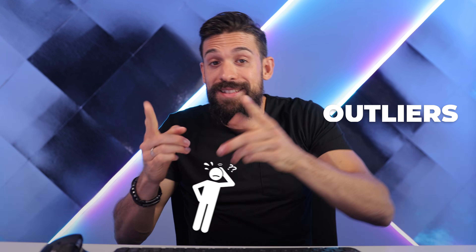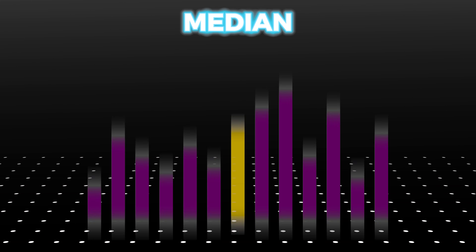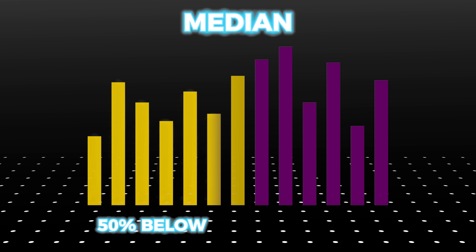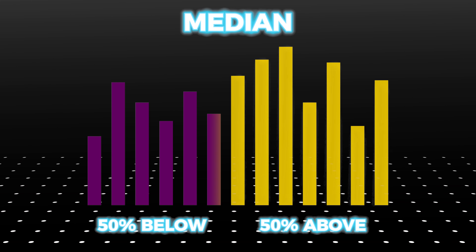When you want to know what is a typical value in your dataset, then probably you take the average. However, the average can be highly influenced by outliers. And that problem we don't have when we look at the median, which is the middle value below which 50% of your data points lie and 50% of your data points lie above it.